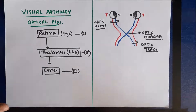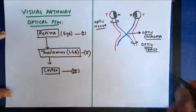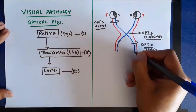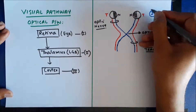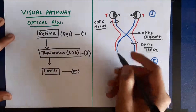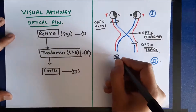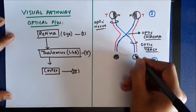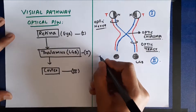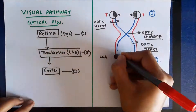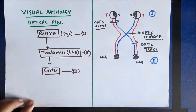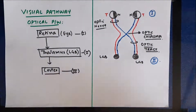The optic tract finally ends up in the lateral geniculate body of the thalamus. This is the second control point. These fibers terminate in the lateral geniculate body of the thalamus.